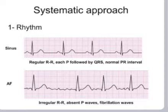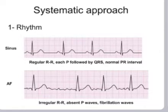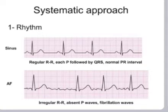In atrial fibrillation, for example, there would be an irregular RR interval, absent P waves, and fibrillatory waves instead.